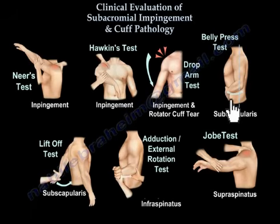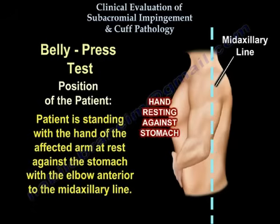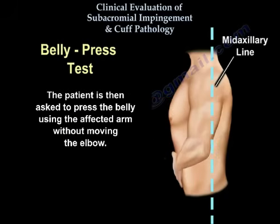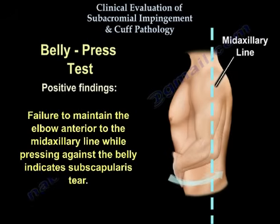Belly Press Test. This is a test for the integrity of the subscapularis muscle. The patient is standing with the hand of the affected arm resting against the stomach, with the elbow anterior to the mid-axillary line. The patient is then asked to press the belly using the affected arm without moving the elbow. Failure to maintain the elbow anterior to the mid-axillary line while pressing against the belly indicates a subscapularis tear.